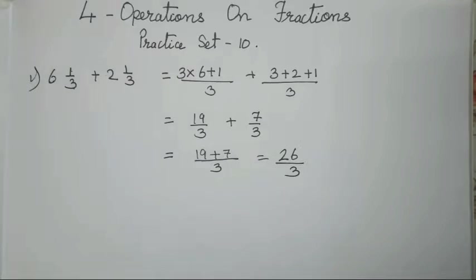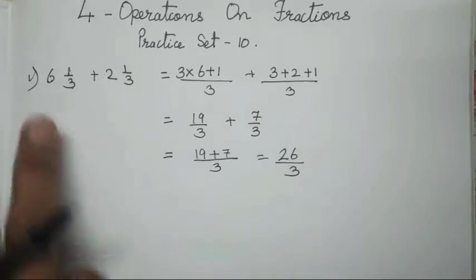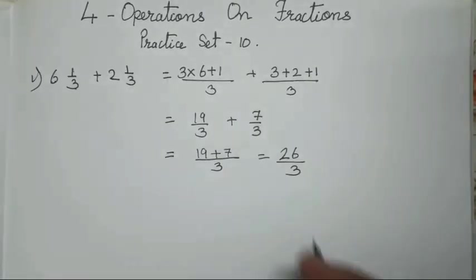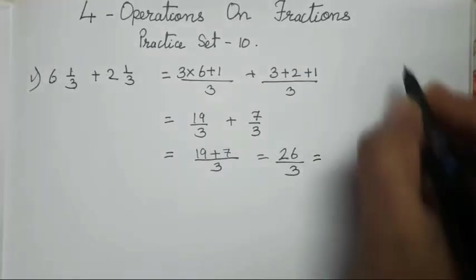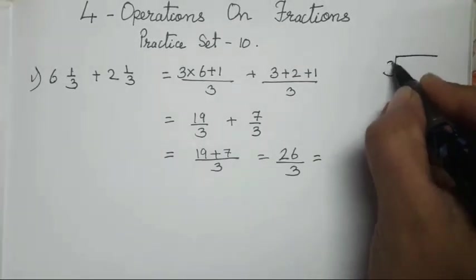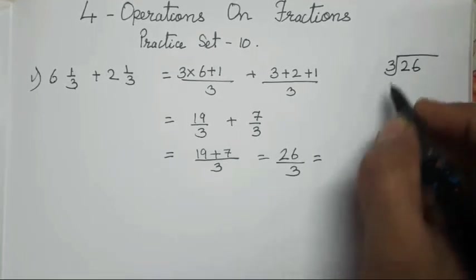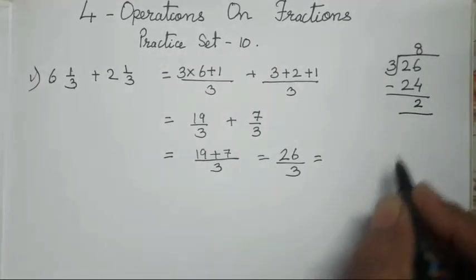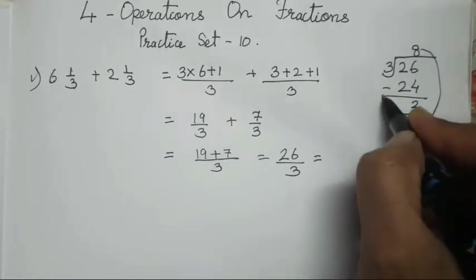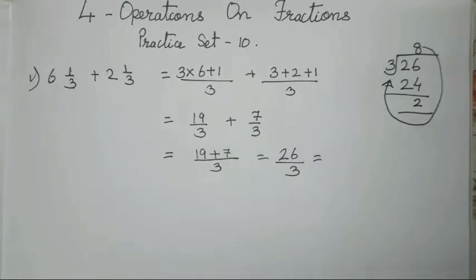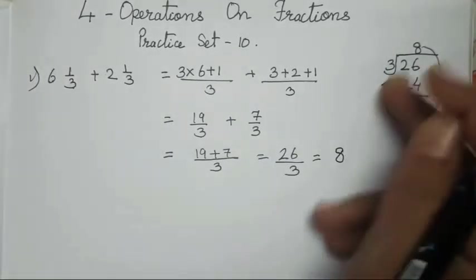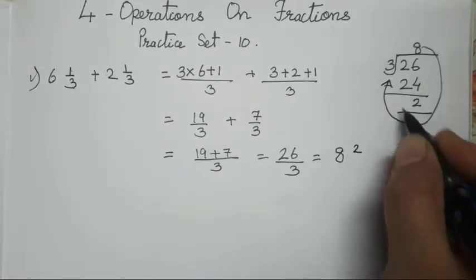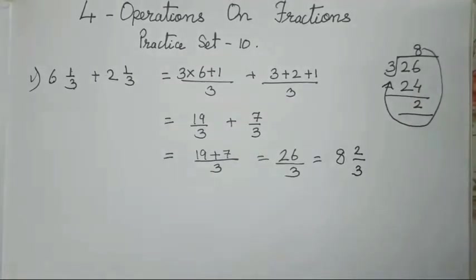I hope this step is clear to everyone — it's very easy, nothing much is to be done here. Now after solving, you all have to again change it into a mixed fraction. For that, I will divide and show you: 3 into 26. 3 eights are 24, and 2 is going to be the remainder. So for writing the mixed fraction, you all have to write 8 first, then 2 over here, and then 3 at the denominator.